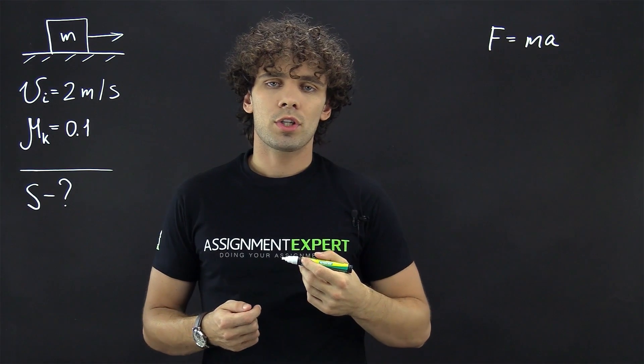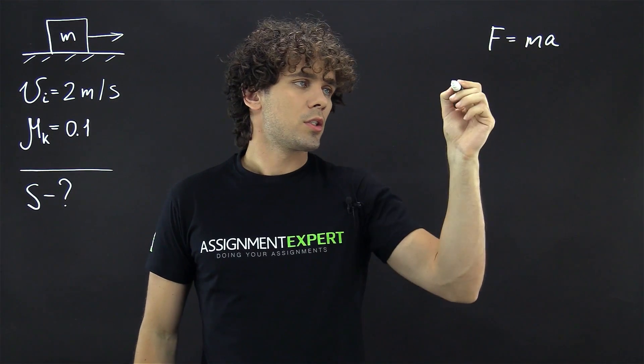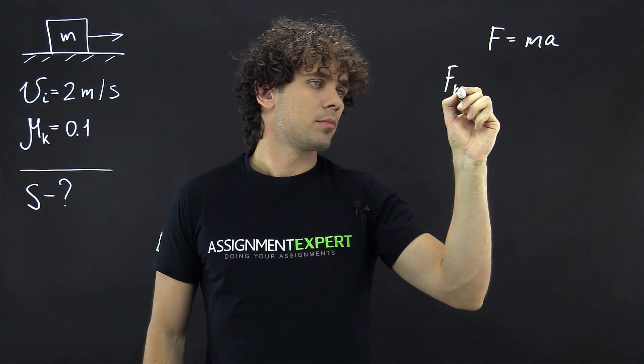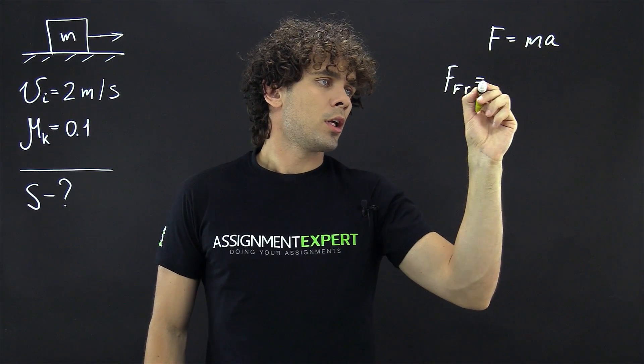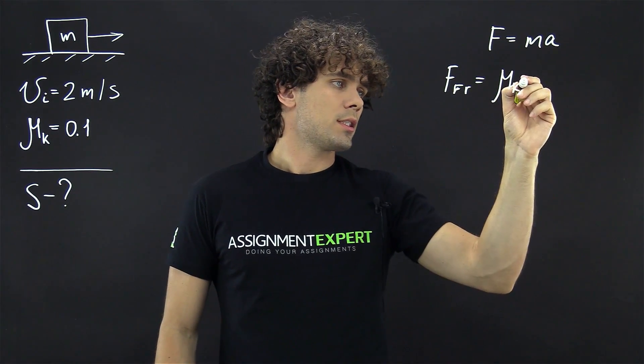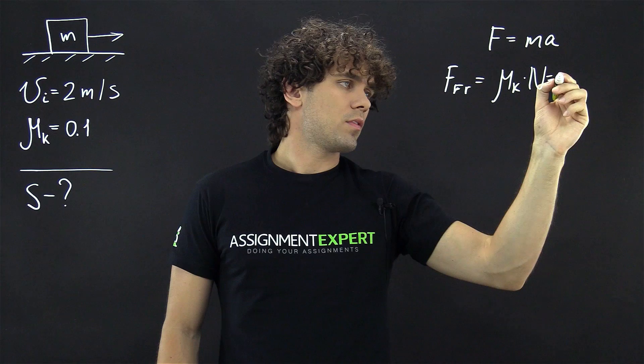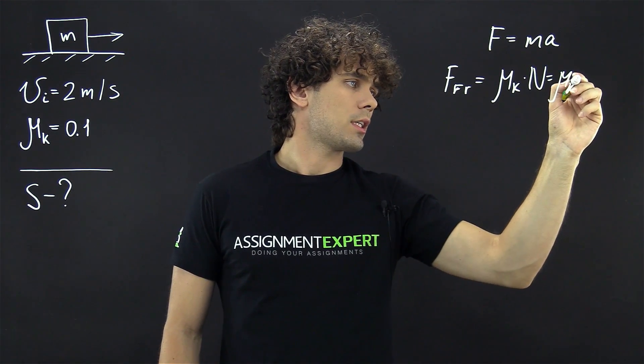In our case, the only force which acts horizontally on the box is the force of friction. So, force of friction equals mu k, coefficient of kinetic friction, times n, which is the normal force. And this gives us mu k times mg.